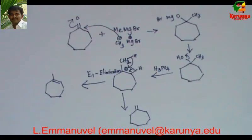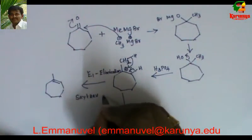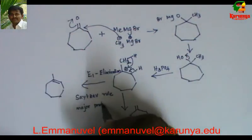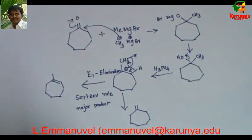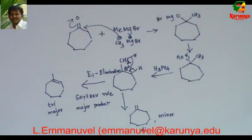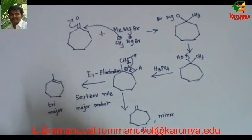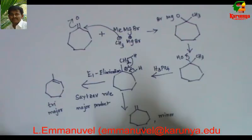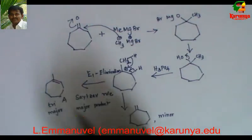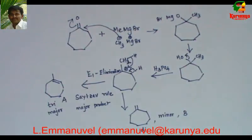In order to predict that, you should know Zaitsev's rule. According to this rule, the highly substituted olefin is the major product. Comparing the two products, this one is tri-substituted and this one is di-substituted. So the major product should be the tri-substituted product and the di-substituted should be minor. The stability of the product decides the product selectivity — highly substituted olefins are more stable than less substituted olefins.